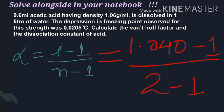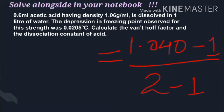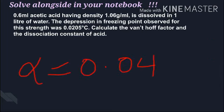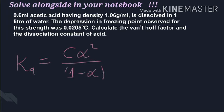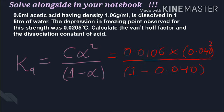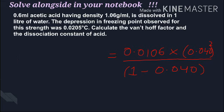Now find the dissociation constant. Ka = c·α² / (1 - α). C is 0.0106, alpha is 0.040. Solve this and you will get the answer - that will be the value of Ka for the acid.